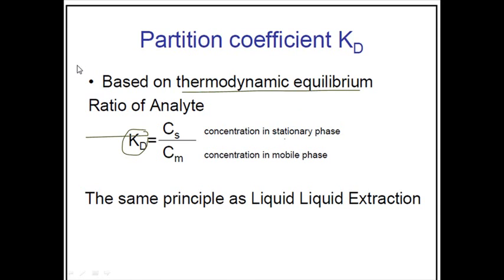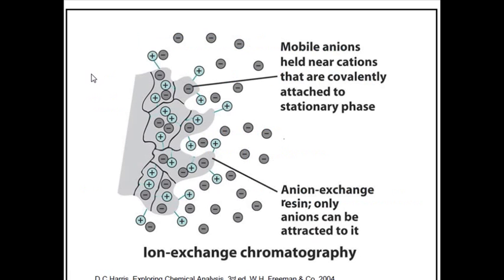Now let's talk about ion exchange chromatography. As the name suggests, ion exchange chromatography has everything to do with ionic compounds. We have a mobile phase and analytes, and in the stationary phase we have specific components. The analytes dissolved in the mobile phase are negatively charged — they are anions.